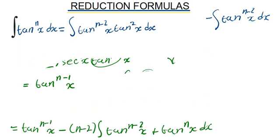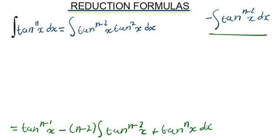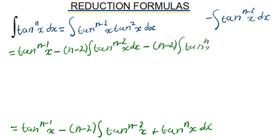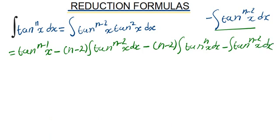Now we must not forget that we set aside an integral earlier — it's high time we bring it back. We are dealing with the expression written as two separate integrals, which equals tan^(n-1)(x) minus (n-2) times the integral of tan^(n-2)(x) dx, minus (n-2) times the integral of tan^n(x) dx, minus the integral of tan^(n-2)(x) dx. This highlighted part is initially what we are looking for.